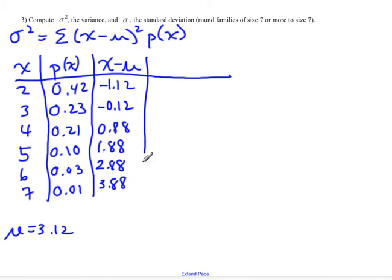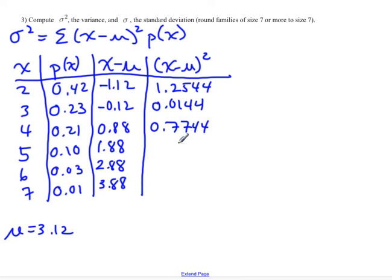Then the formula says to square all of these, so we will now square all these values. We'll take -1.12 and square it. Don't forget, when you square a number it becomes positive, so I just leave the negative signs off when I square them. 1.12² is 1.2544, 0.12² is 0.0144, 0.88² is 0.7744, 1.88² is 3.5344, 2.88² is 8.2944, and 3.88² is 15.0544.